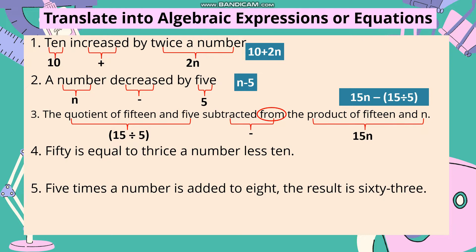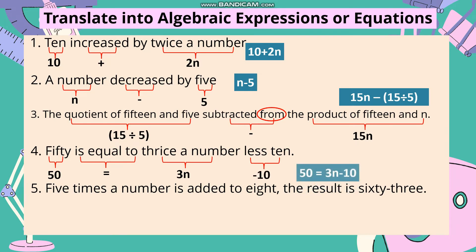Number 4: '50 is equal to thrice a number less than 10.' We write 50, then 'is equal to' gives us an equal sign. 'Thrice a number' is 3n. 'Less than 10' means minus 10. So our mathematical symbol is 50 equals 3n minus 10.